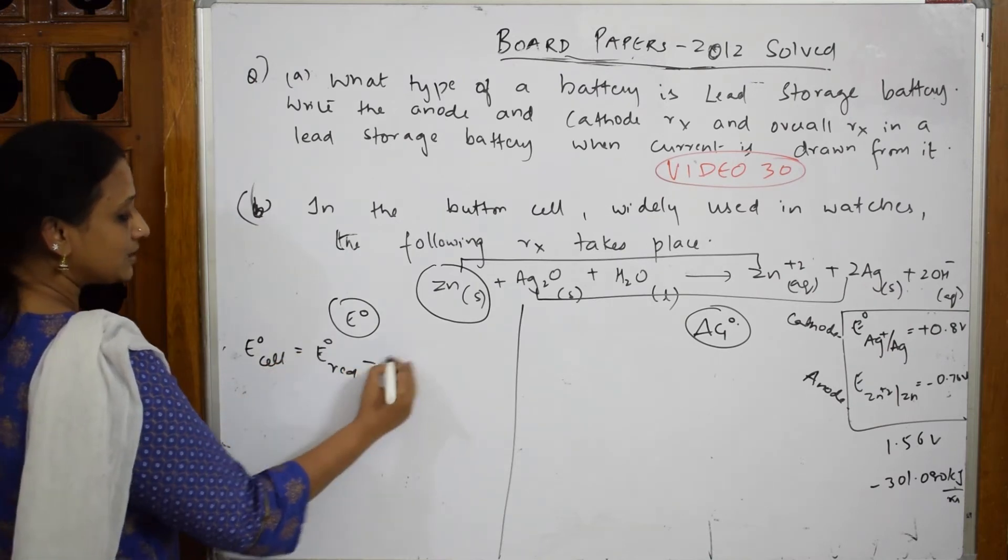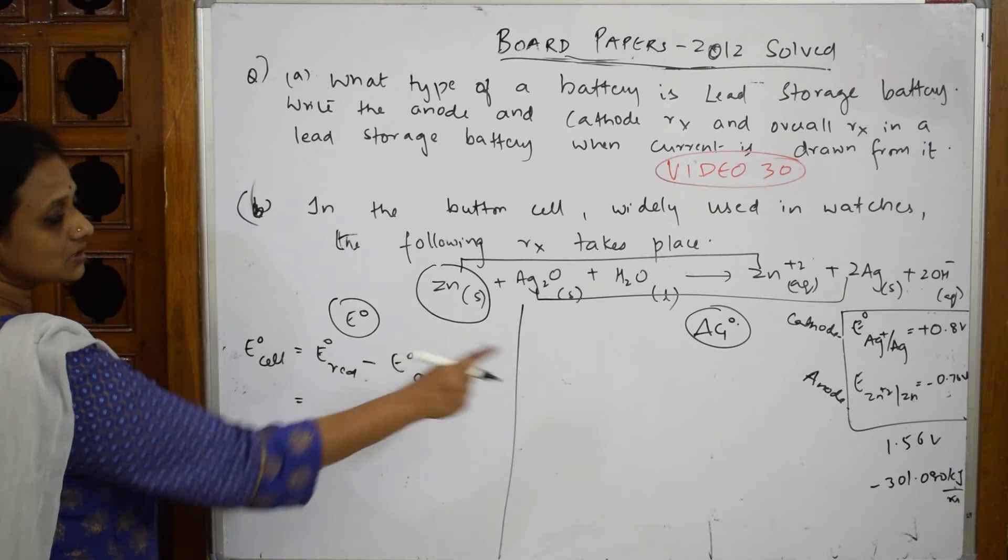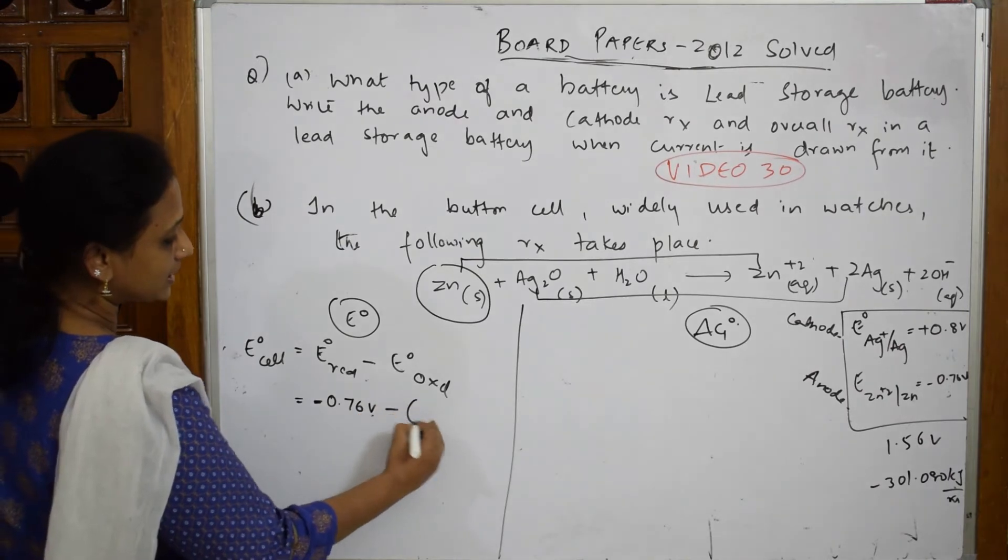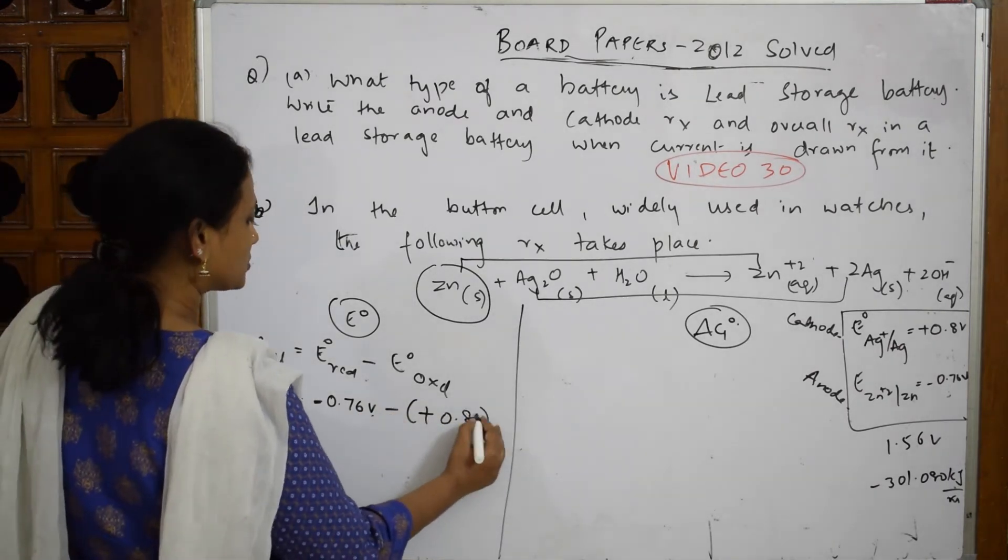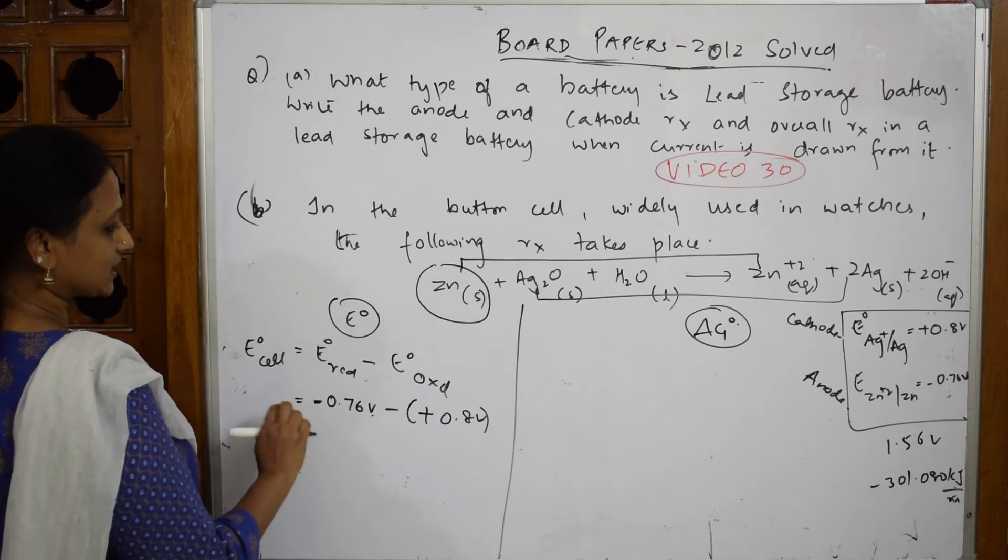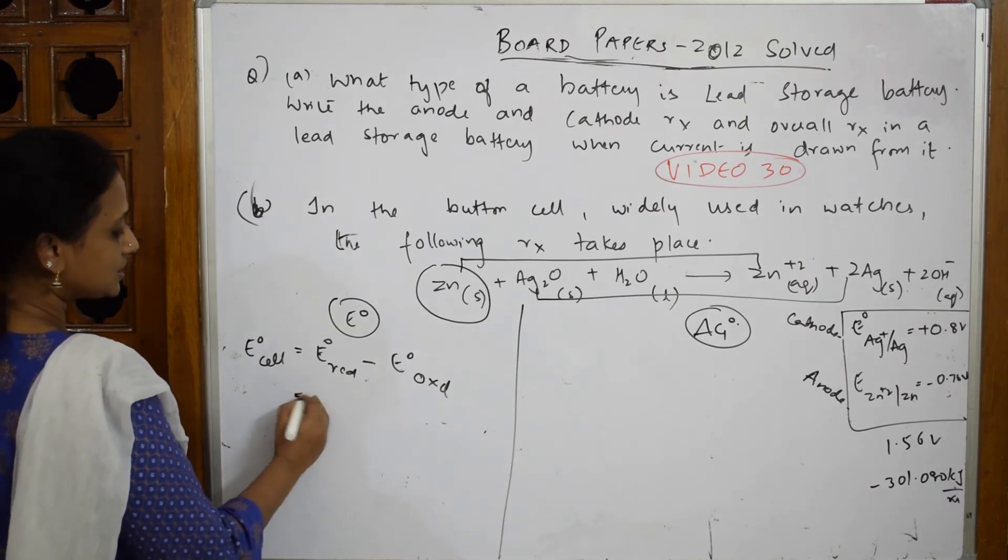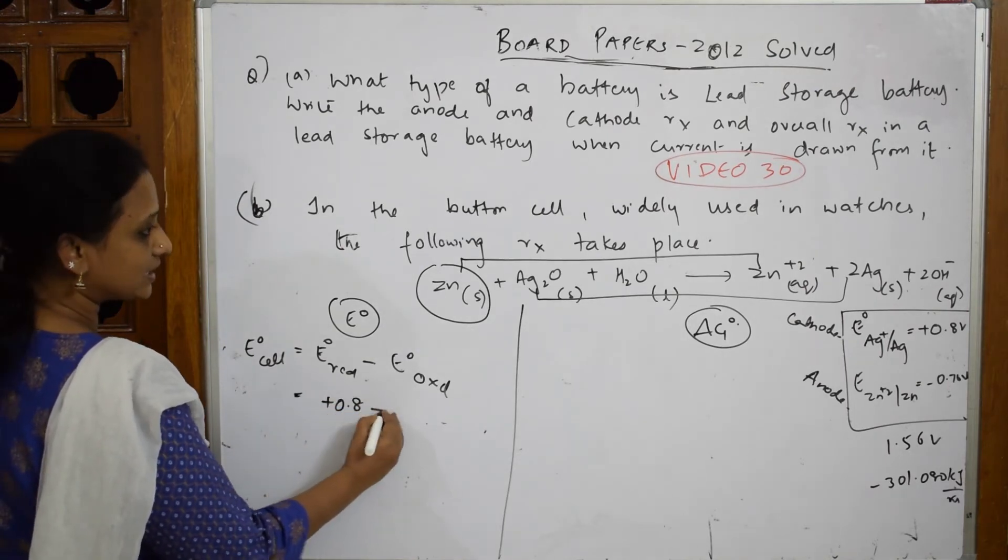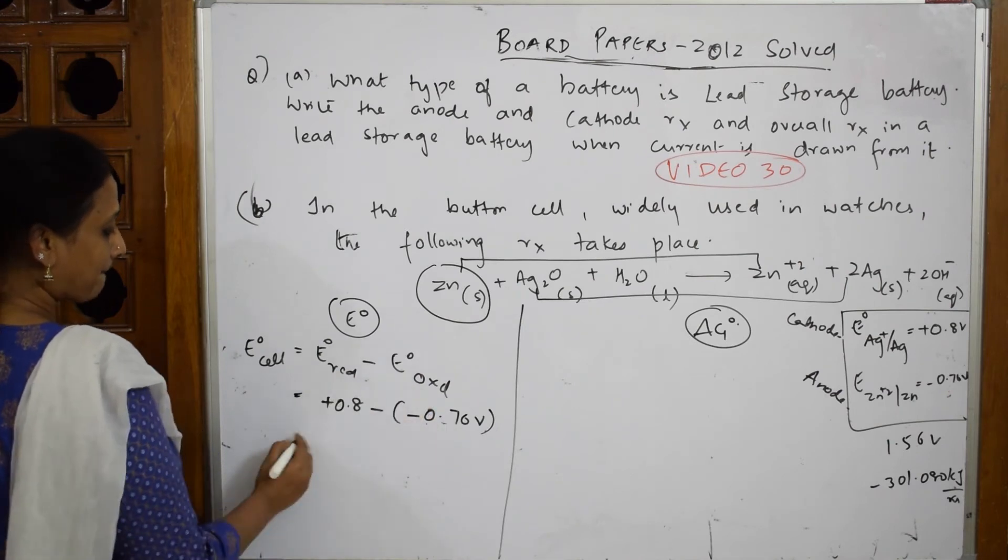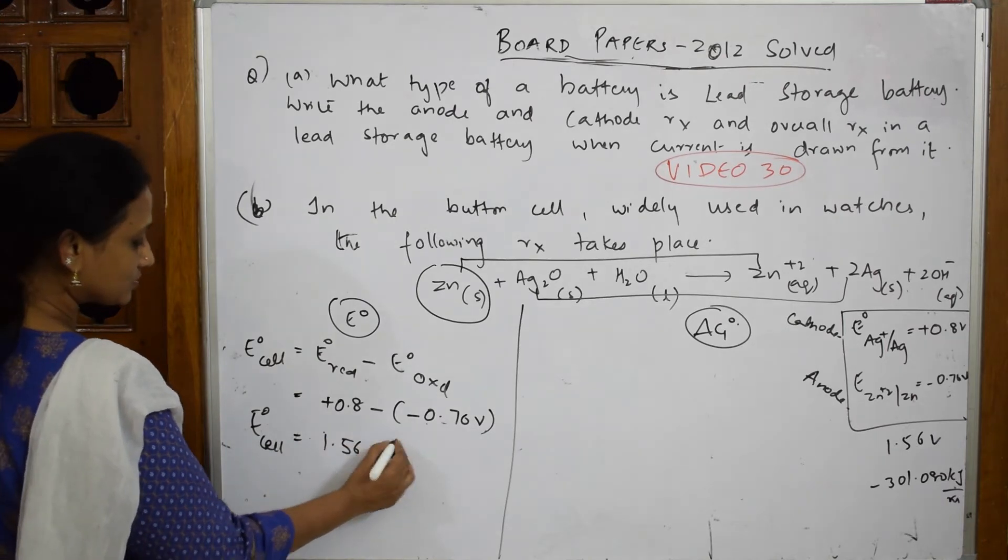What is E° reduction value? It is - careful with the signs - for silver it is +0.8 volts minus of minus 0.76 volts. This is the reduction value for silver, this is for zinc. When I do this, I get +0.8 minus (-0.76). This is reduction, this is oxidation. I get an answer of E° cell equal to 1.56 volts.